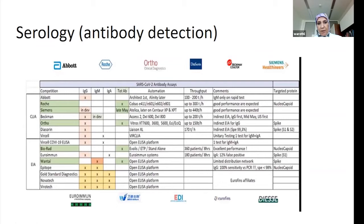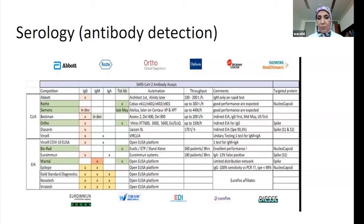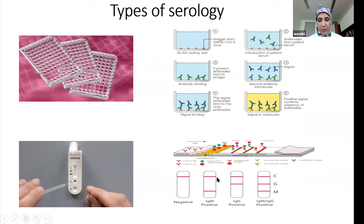Moving on to serology: there is an array of serological tests available. They can detect IgG, IgM, or IgA, or what we call total antibody (IgG and IgM together). They can target nucleocapsid antibodies or spike antibodies. Most of them are qualitative in nature, but some quantitative assays exist as well. These include ELISA platforms and lateral flow or point-of-care assays.